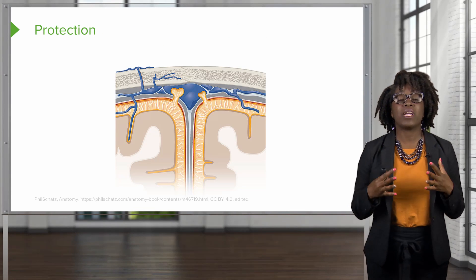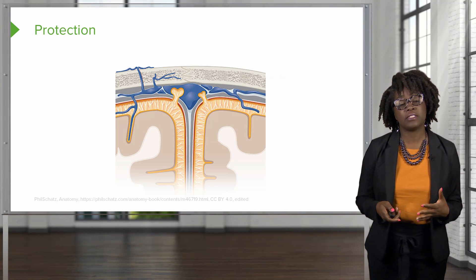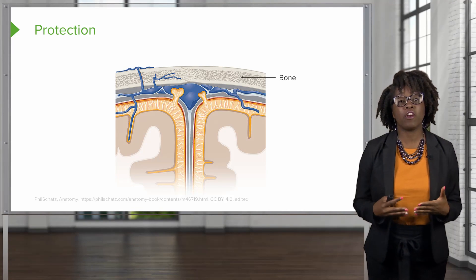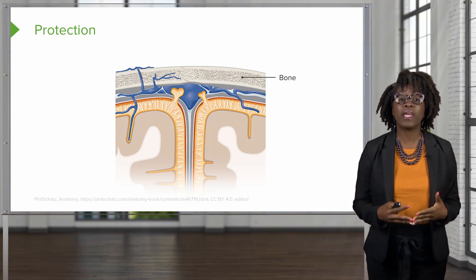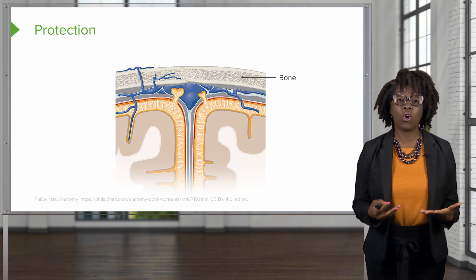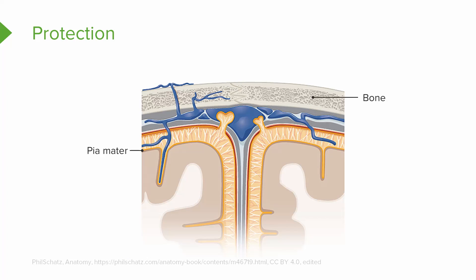The brain is protected by three major layers. The outermost layer of protection is going to be the cranial bones, or your skull. The next layer of protection is a connective tissue layer known as the cranial meninges, which includes the pia mater, the arachnoid mater, and the dura mater. The last layer of protection is the cerebrospinal fluid.